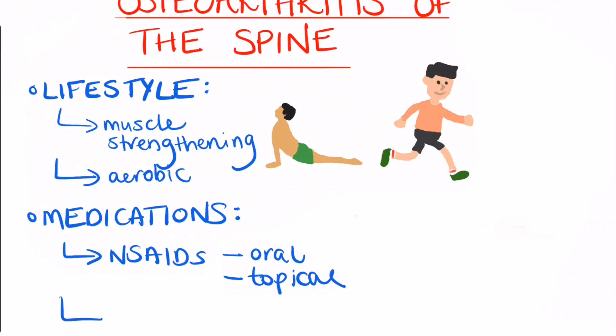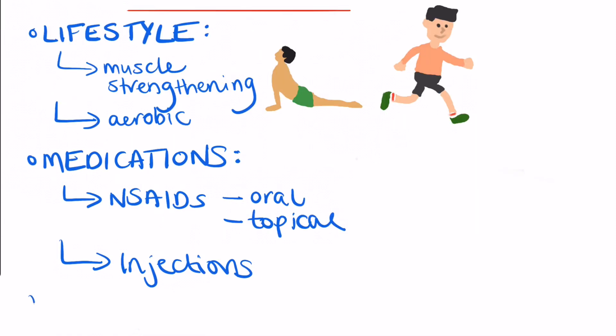Injections of corticosteroids around the spinal column can relieve moderate to severe pain in people with osteoarthritis. Usually osteoarthritis of the spine is treated without surgery, but surgery can sometimes be performed — for example, if osteoarthritis causes stenosis and narrowing of the spinal canal, where bladder dysfunction or neurovascular damage may occur.